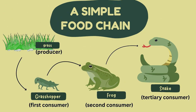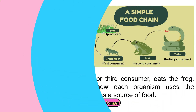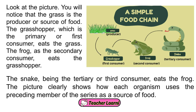Study the animals in the picture. You will notice that the grass is the producer or source of food. The grasshopper, which is the primary or first consumer, eats the grass. The frog, as the secondary consumer, eats the grasshopper. The snake, being the tertiary or third consumer, eats the frog. The picture clearly shows how each organism uses the preceding member of the series as a source of food.